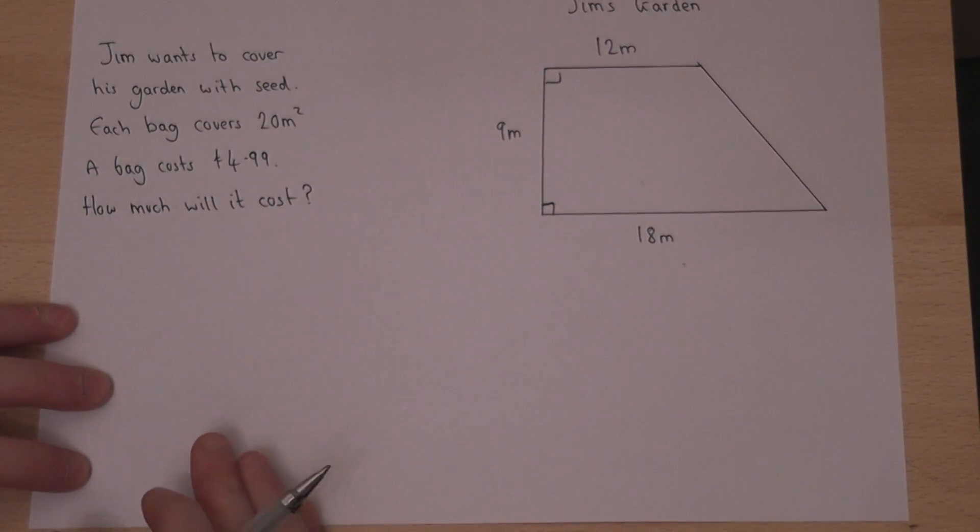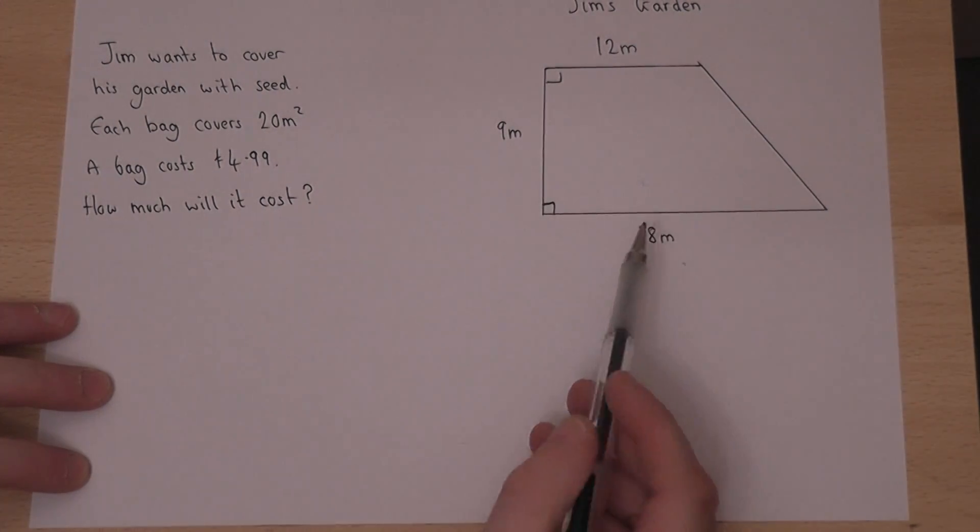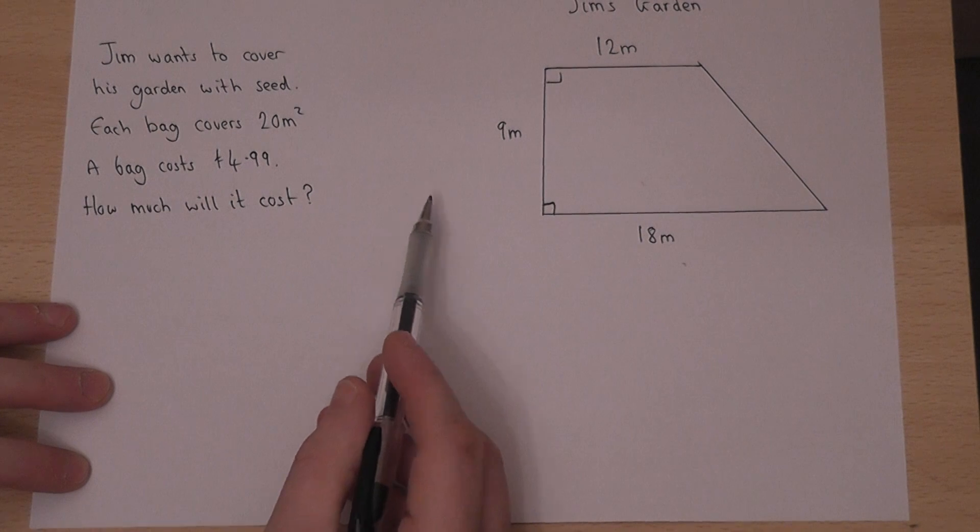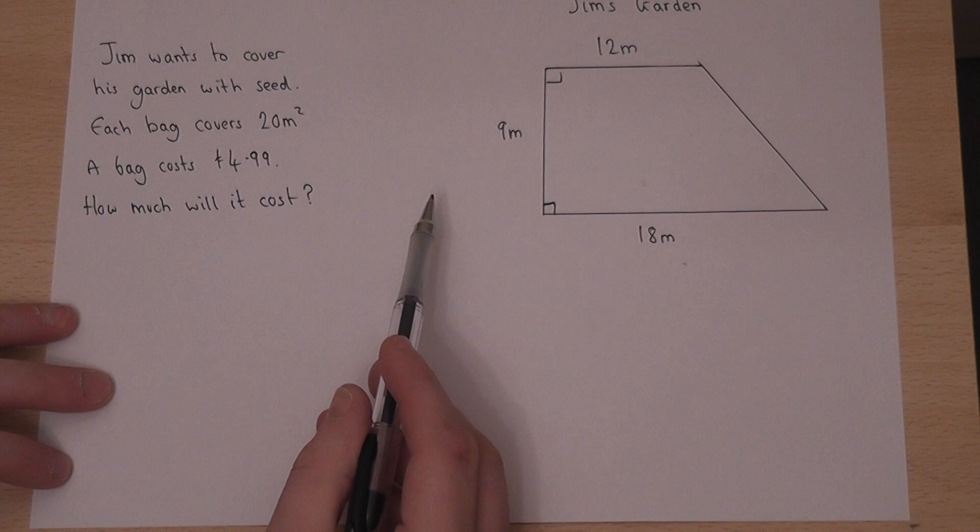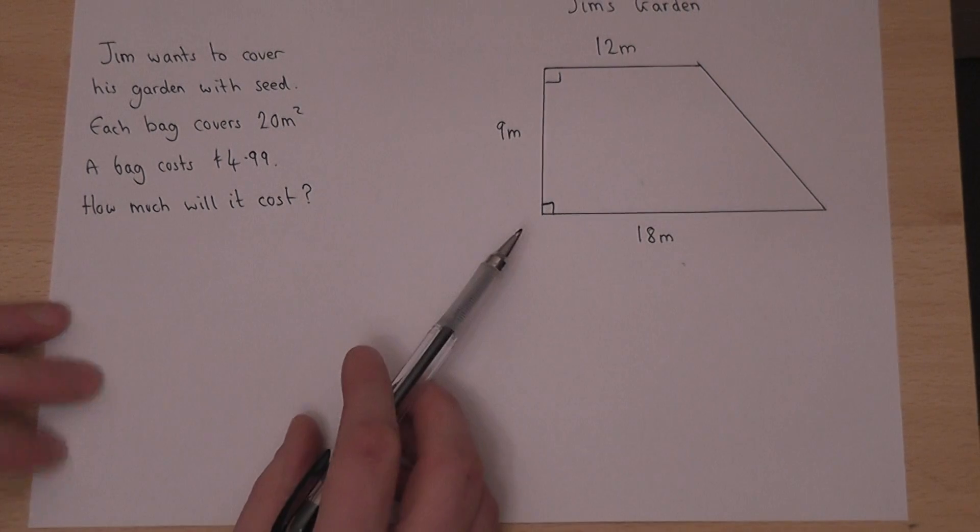In this question, Jim has a garden which is in the shape of a trapezium and he wants to cover the entire garden with seed. Each bag of seed covers 20 meters squared and one bag costs £4.99. The question is what's the least amount he has to pay to cover his garden.